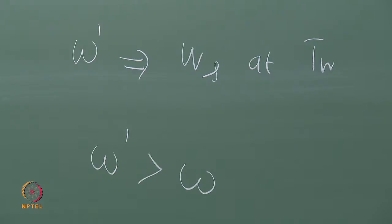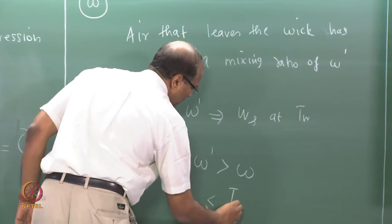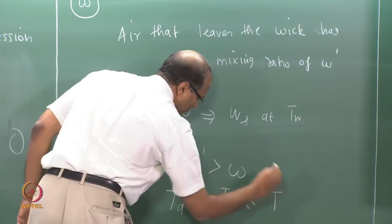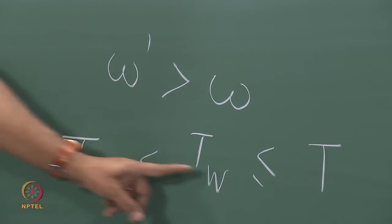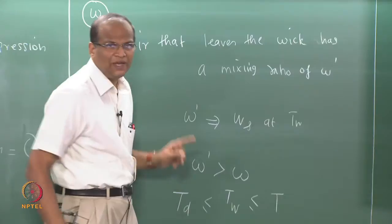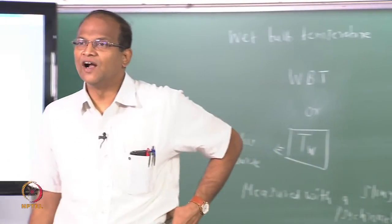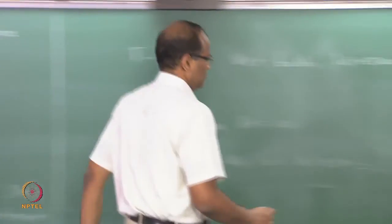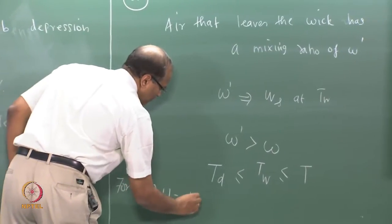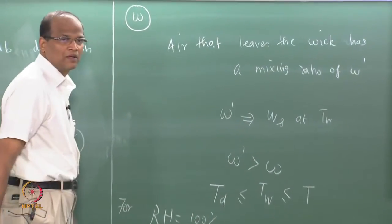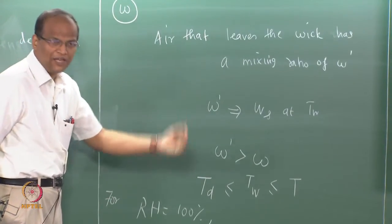Now, Td — the highest is the dry bulb temperature, the lowest is the dew point temperature, and the wet bulb temperature is in between. It is an inequality with equality being applicable in the case of 100% RH. What is the rule for 100% RH? Td equal to Tw equal to T.